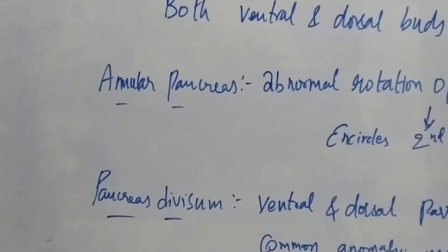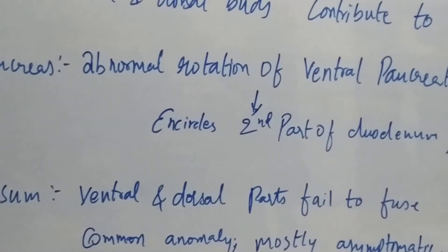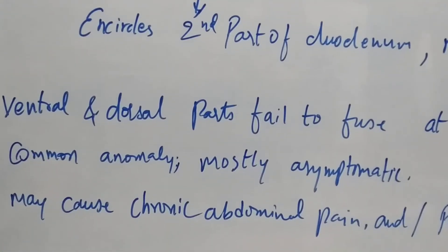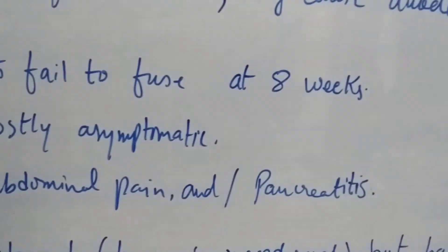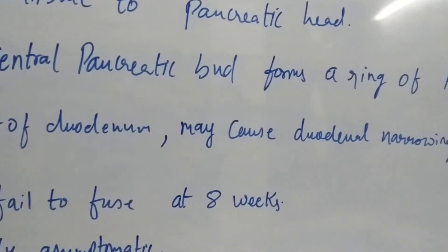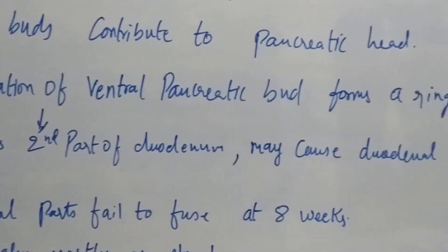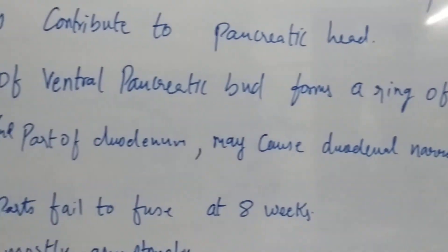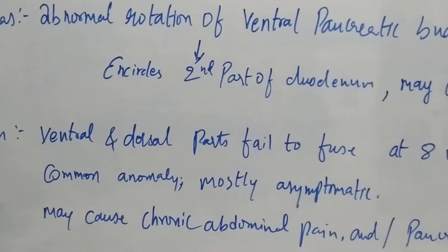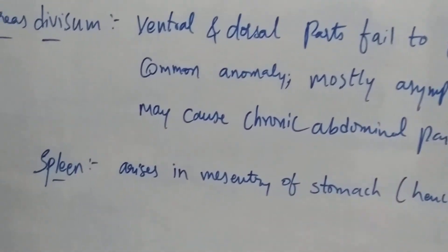Pancreas divisum is the second embryological defect of the pancreas. It occurs when the ventral and dorsal parts fail to fuse at eight weeks. It is a common anomaly, mostly asymptomatic, but may cause chronic abdominal pain and/or pancreatitis.